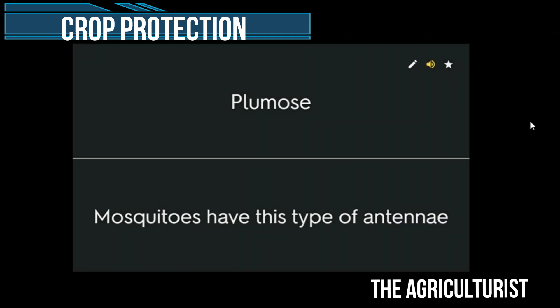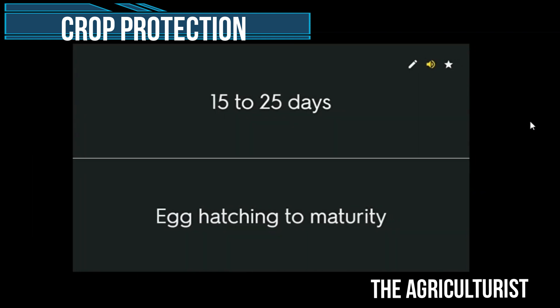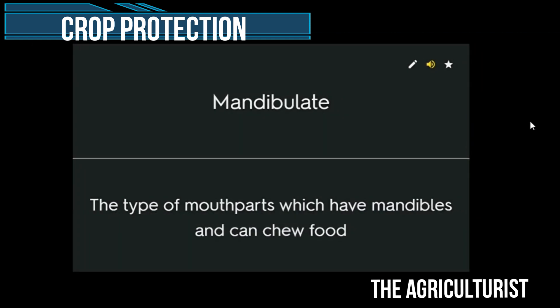Plumose — mosquitoes have this type of antennae. 15 to 25 days — egg hatching to maturity. Mandibulate — the type of mouthparts which have mandibles and can chew food.